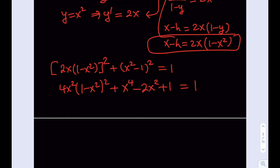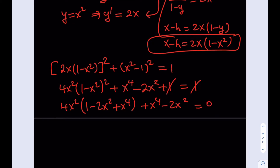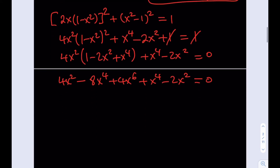Expanding and distributing: 4x²(1 − 2x² + x⁴) + x⁴ − 2x² = 0, which gives 4x² − 8x⁴ + 4x⁶ + x⁴ − 2x² = 0. Arranging the terms: 4x⁶ − 7x⁴ + 2x² = 0. One nice feature is that this degree-6 equation has no constant term.